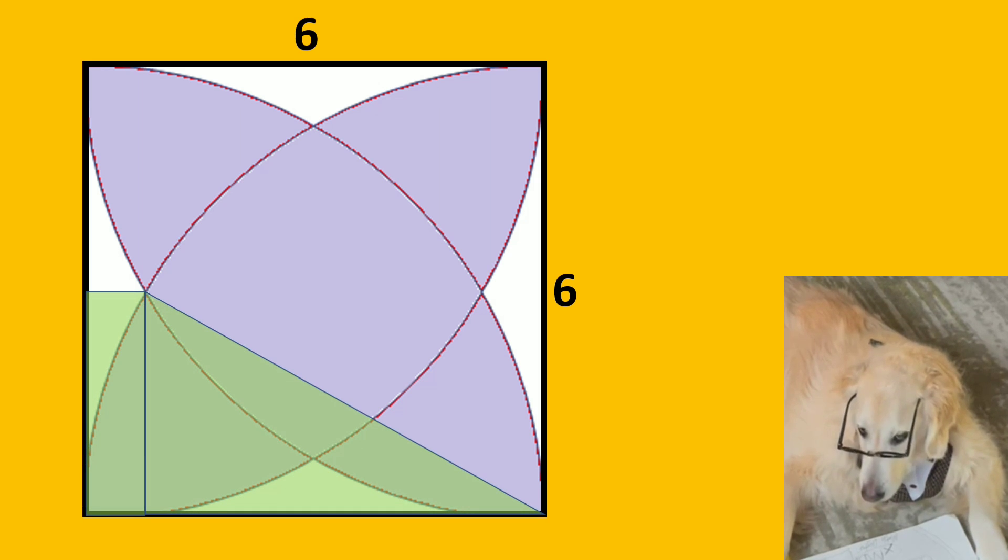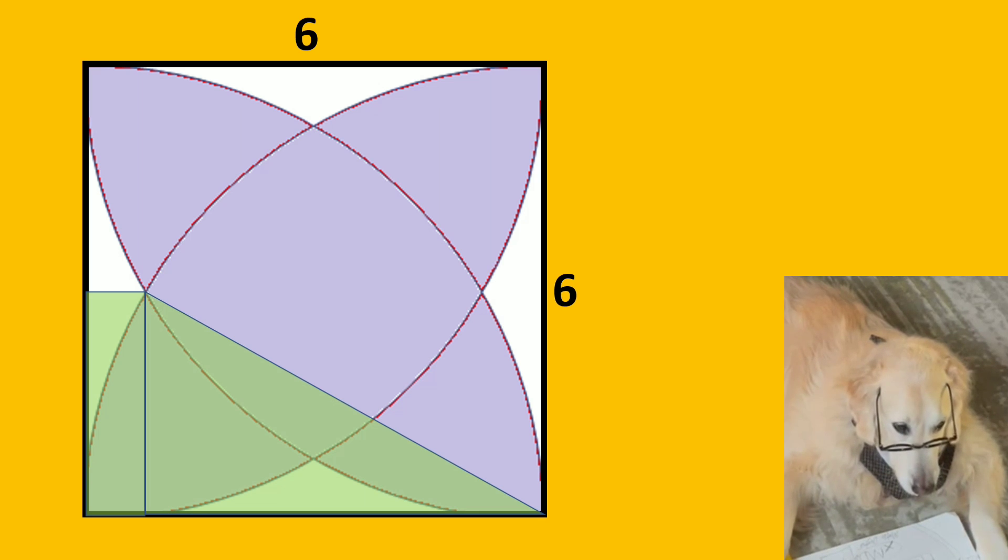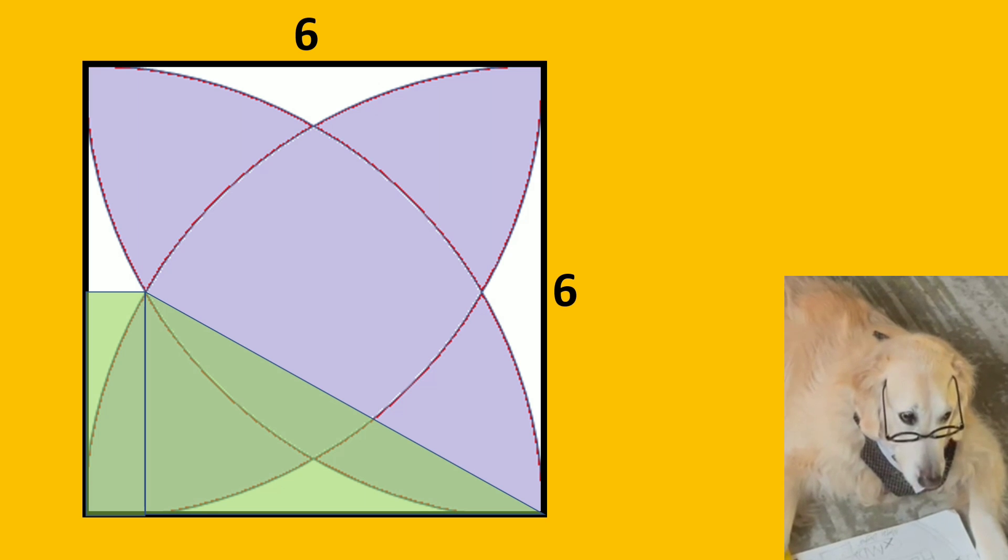Our goal is to find white areas first and then subtract them from the area of the square. We can solve this question with more than one method, but I chose to solve it with the help of this green trapezoid.